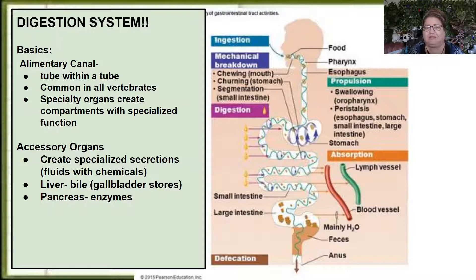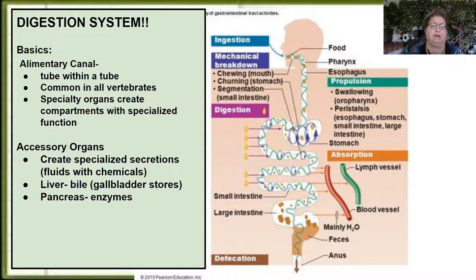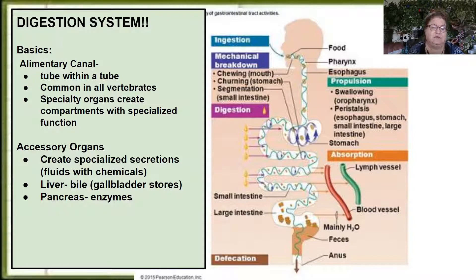With the digestive system we're going to be looking at absorbing and transporting the nutrients, but before we do that we have to get the food and then break it down. All vertebrates have what's called an alimentary canal — the tube that goes through you from mouth to anus. You could have a discussion on whether food is actually inside your body; it's inside the tube, so we're bringing the outside in, and then it has to be absorbed and distributed.